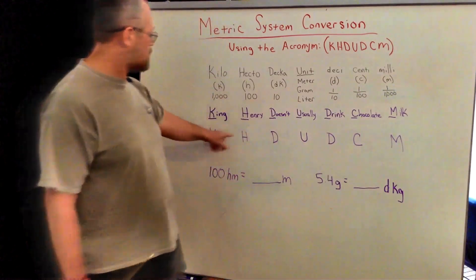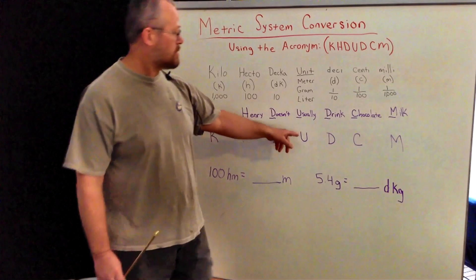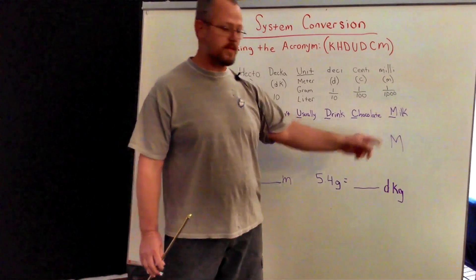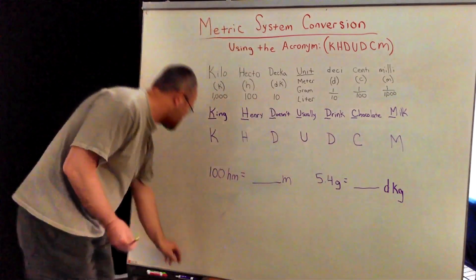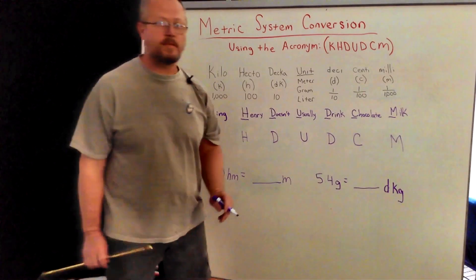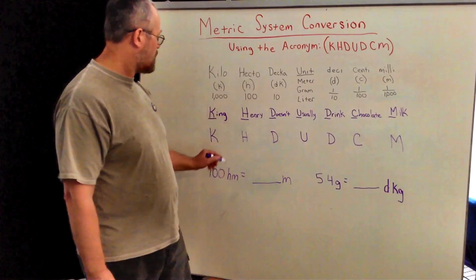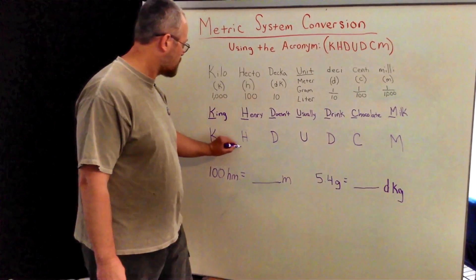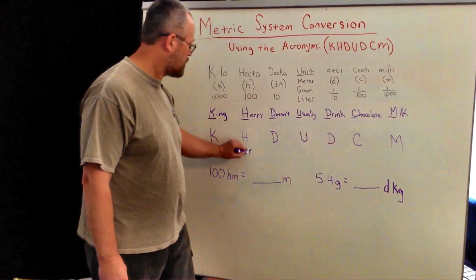Okay, so we have kilo, hecto, deca, units, deci, centi, and milli. We're going to take 100 hectometers, and what I do is write 100 under the label hecto.